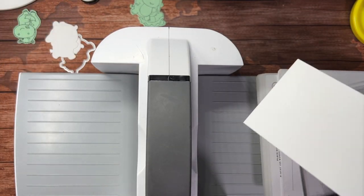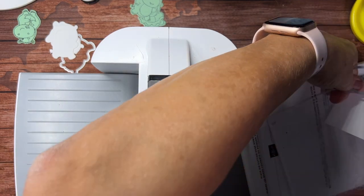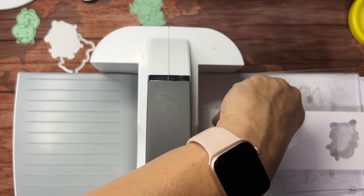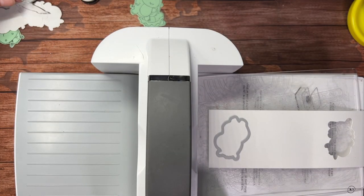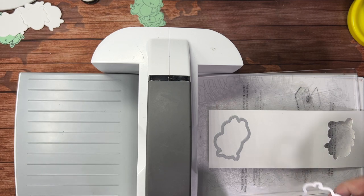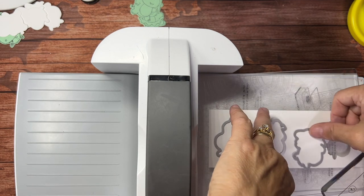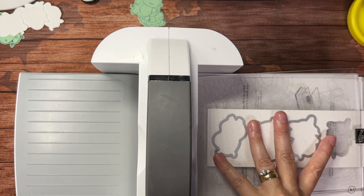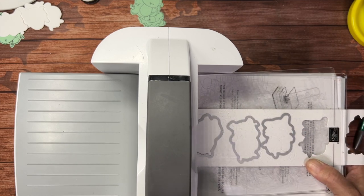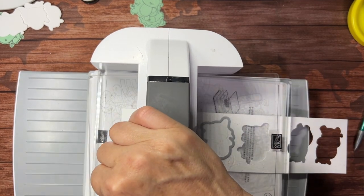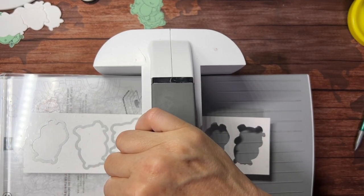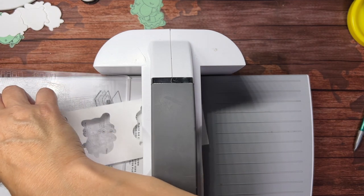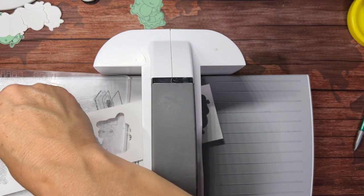So now I've die cut three hippos out, get them out of the way. And I'm going to do it again. I'm going to take my plate, put my cardstock back in here, get my dies, place them on there, and I would repeat this until I had as many of these hippos die cut as I needed.